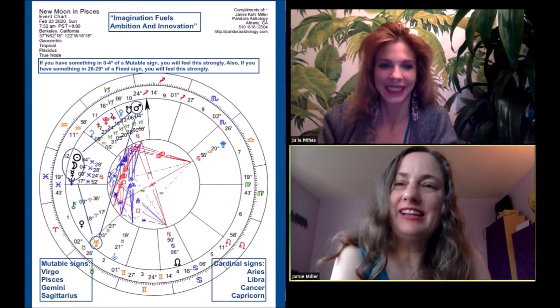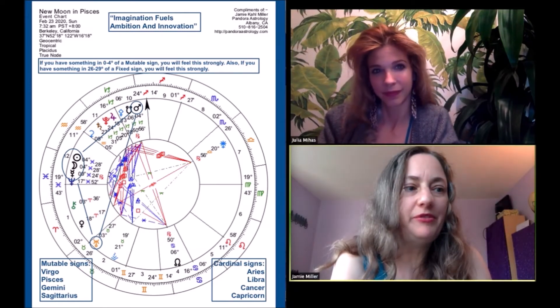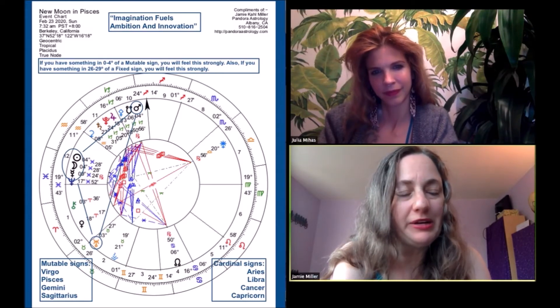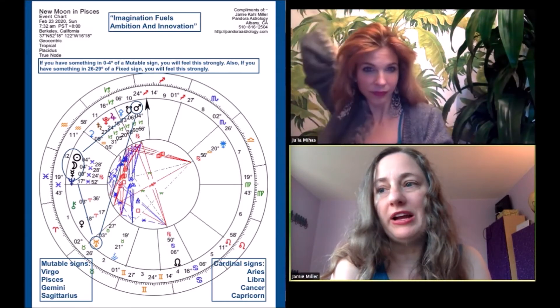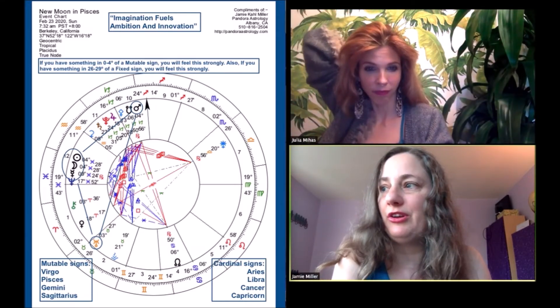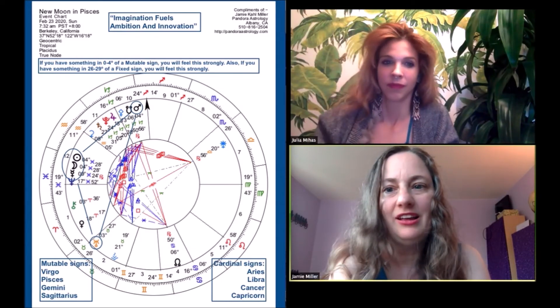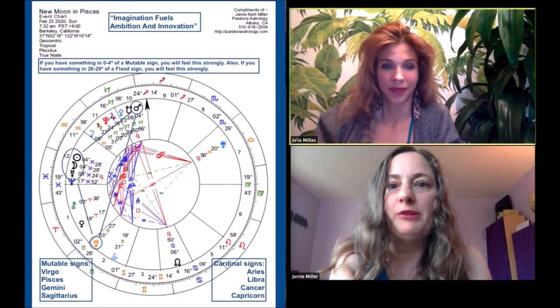Yeah. So it might be, there might be some confusion. There might be some mystery. There might be some of that Neptune quality of, because Neptune rules Pisces, of being in a holding pattern where you're waiting for something and maybe you just don't even know what you're waiting for. You know, you'll know when it's ready, but you don't exactly know when that's going to be. That's a very Pisces feeling.